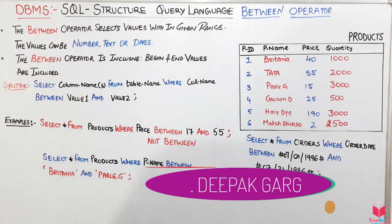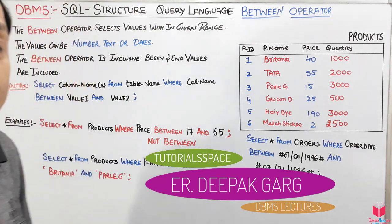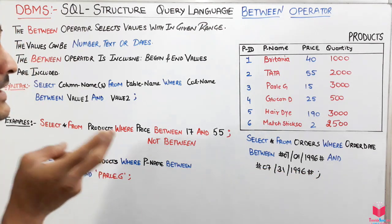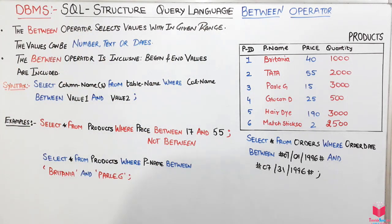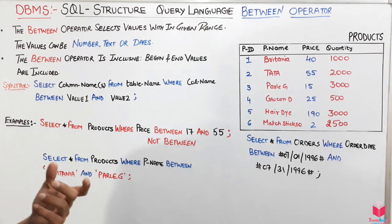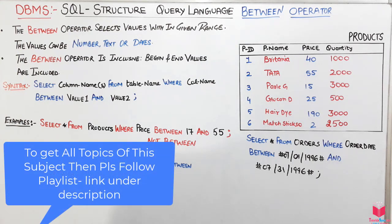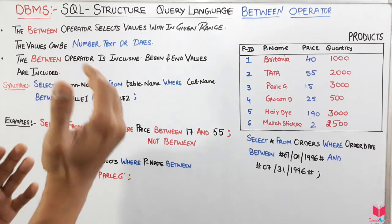The BETWEEN operator selects values within a given range — that means we have to pass two values to a column, and those two values will be considered as the range. These values can be numbers, text, or dates as well. The BETWEEN operator is inclusive, meaning the begin and end values are included.